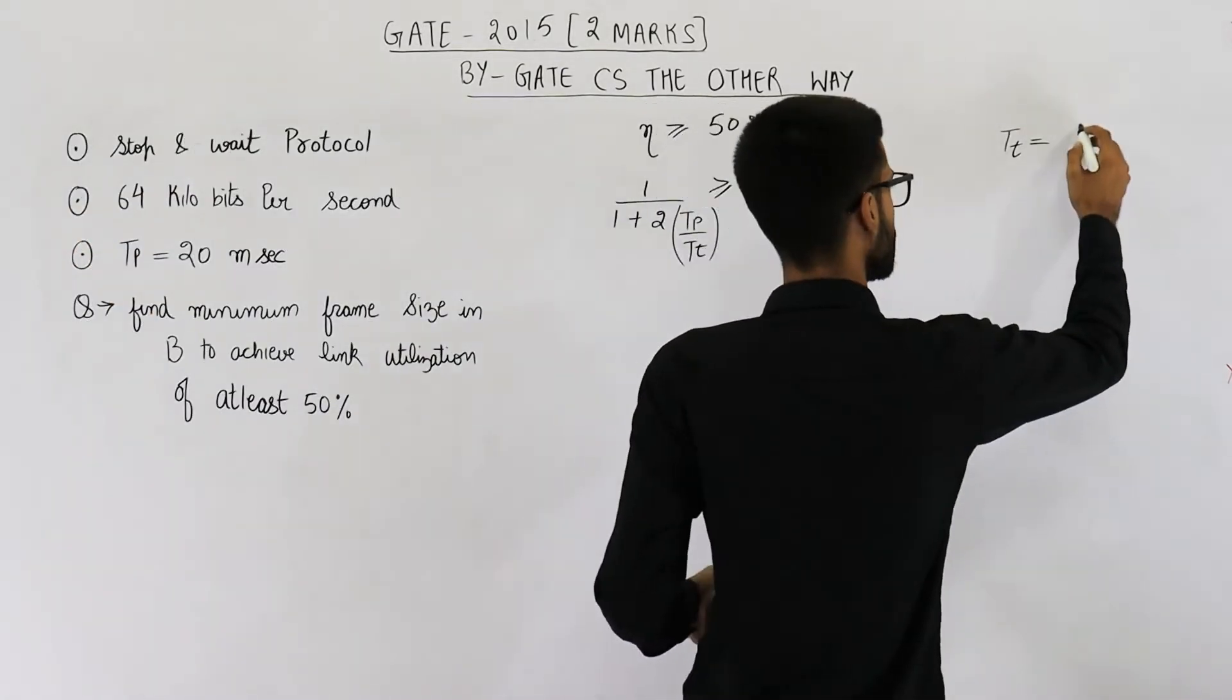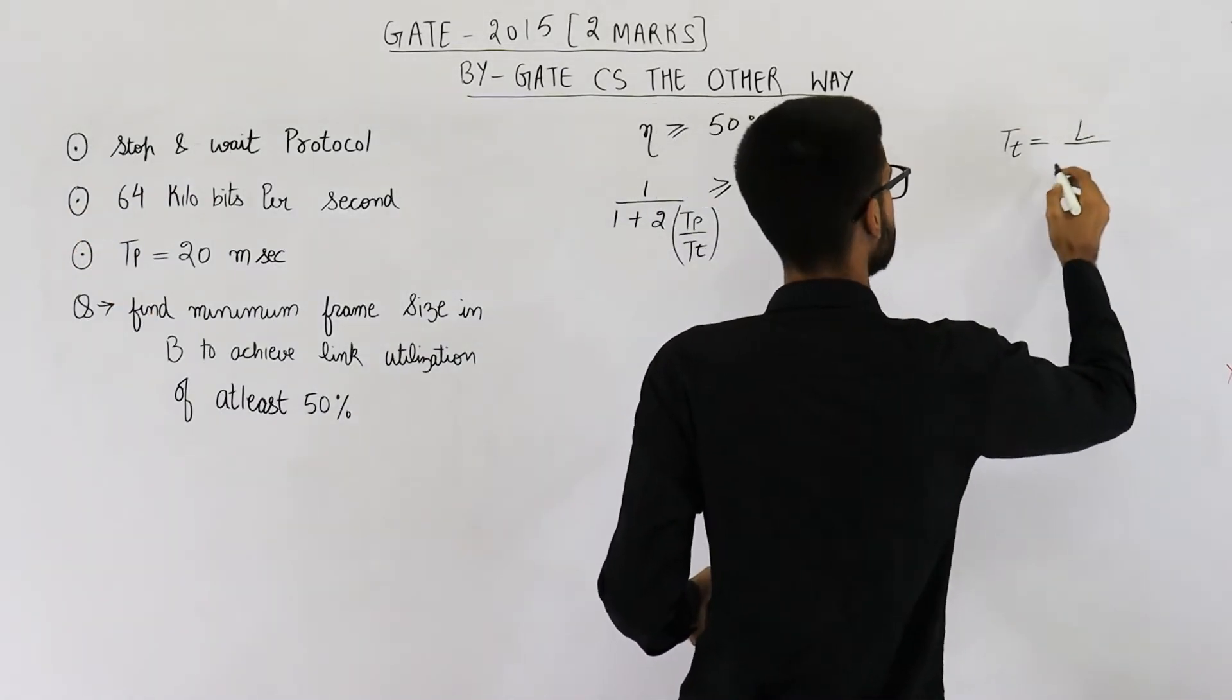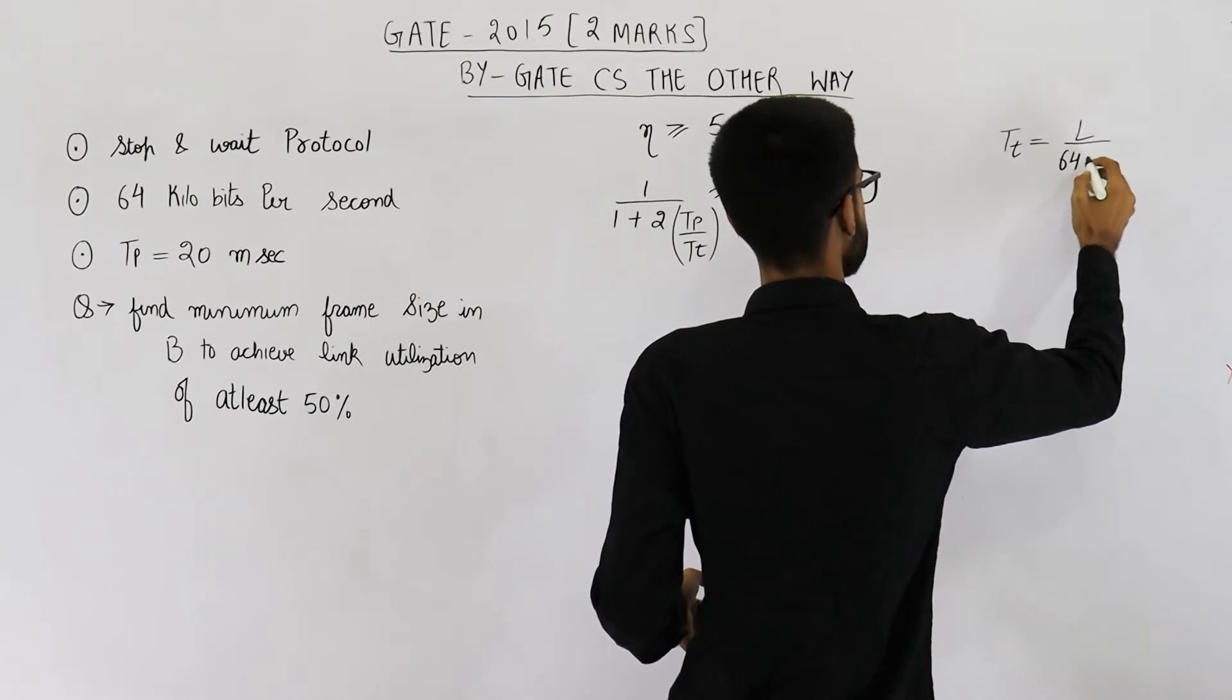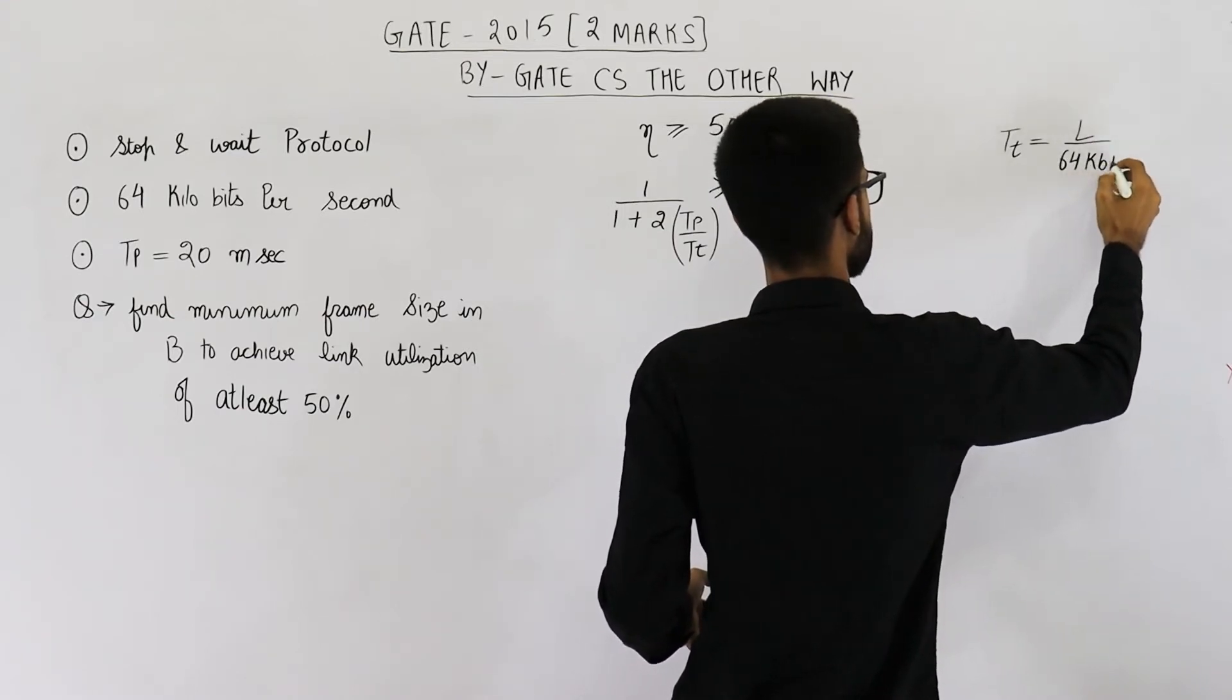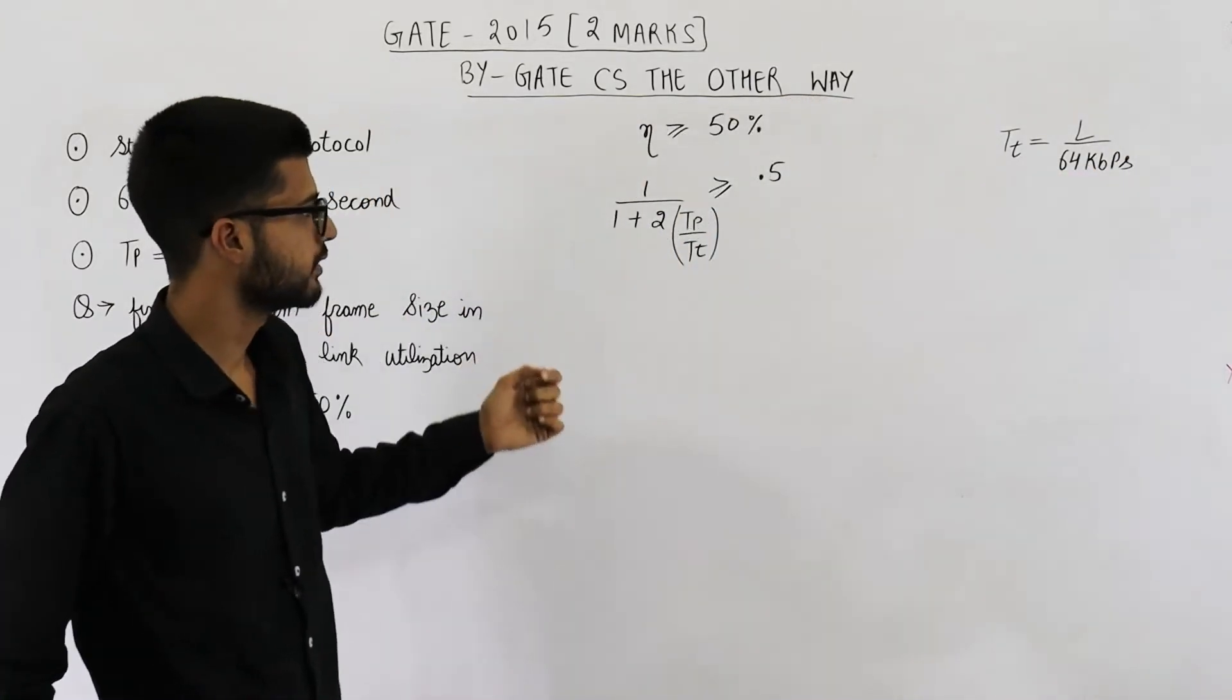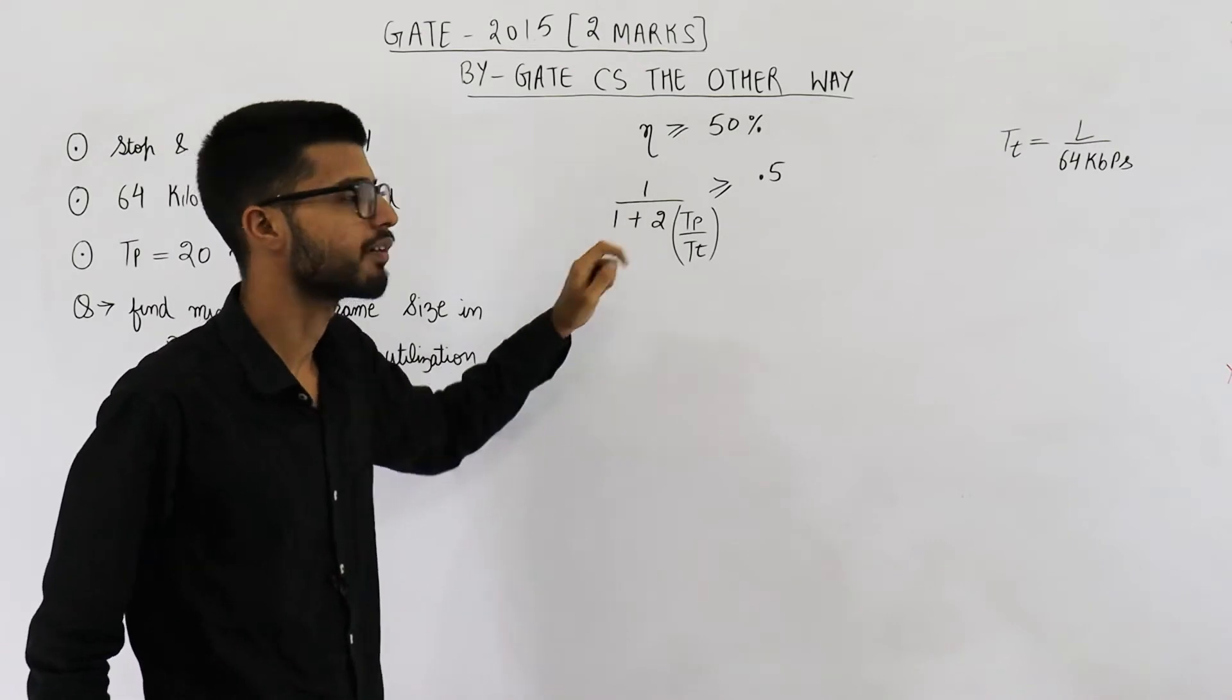So let us assume that frame size is L. Then L divided by B will be L divided by 64 kbps. So now we can easily determine the value of 1 upon 1 plus 2a.